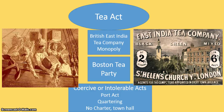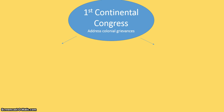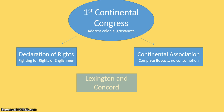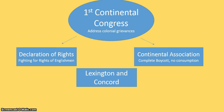Britain wants to punish Boston with the coercive acts, or the intolerable acts. This is where they close the Port of Boston — no shipping in or out — require more quartering of troops, take away their Massachusetts charter, and take away their town hall meetings so the colonists cannot meet together to form any new protests. This leads to the First Continental Congress to address colonial grievances, with delegates from every colony except Georgia. They send a declaration of rights to the king, saying they're fighting for the rights of Englishmen like trial by jury and taxation with representation. They also create the Continental Association — a complete boycott with no exports, no imports, and no consumption of British goods.